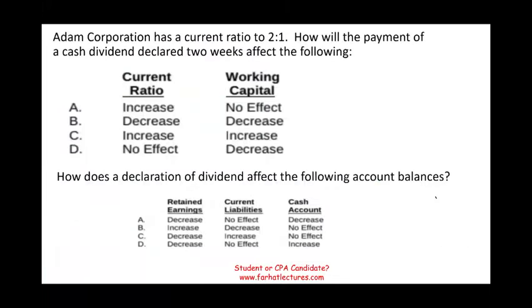So let's take a look at those two questions. As I'm going to illustrate, basic knowledge from Financial Accounting 101 will help you solve CPA questions as long as you have that strong basic knowledge. The question: Adam Corporation has a current ratio of two to one. How will the payment of a cash dividend declared two weeks ago affect the following? So you have to read the question very carefully — they're asking about the payment of a cash dividend that was declared two weeks ago.